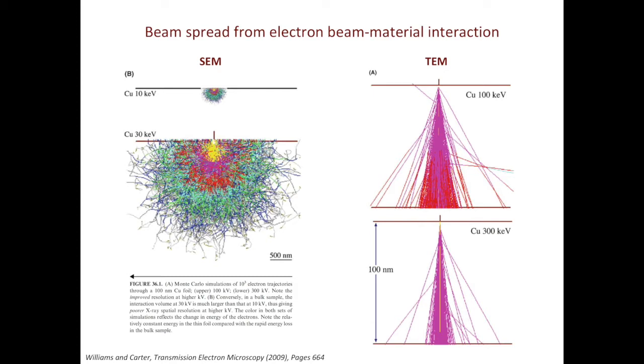To wrap up this slide, in SEM, if you increase the acceleration voltage of the electron beam, the interaction volume and the beam spread will increase. In TEM, due to the finite thickness of the specimen, if you increase the acceleration voltage of the beam, both the interaction volume and the beam spread will be reduced.